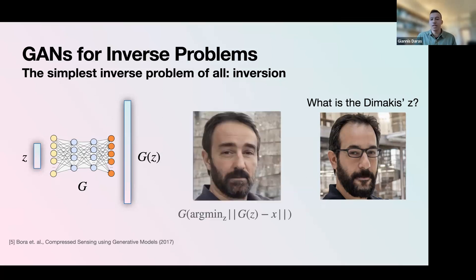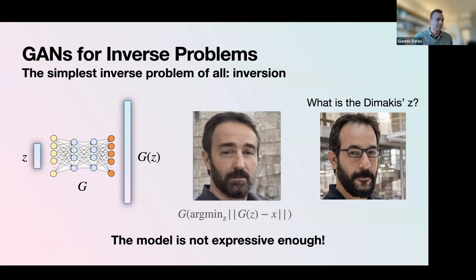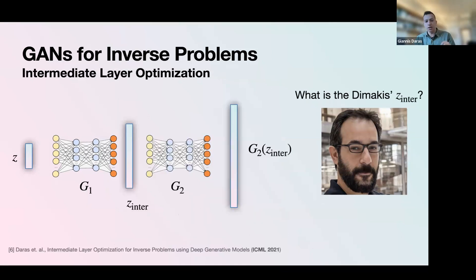When we showed the result to my advisor back in 2020, he was not happy — the reconstructed person kind of looked like him but older, with different facial details. There could be many explanations, but the main reason is that the model is not expressive enough. The network maps from a low-dimensional space z to a very high-dimensional image, so some images simply cannot be described by that low-dimensional vector.